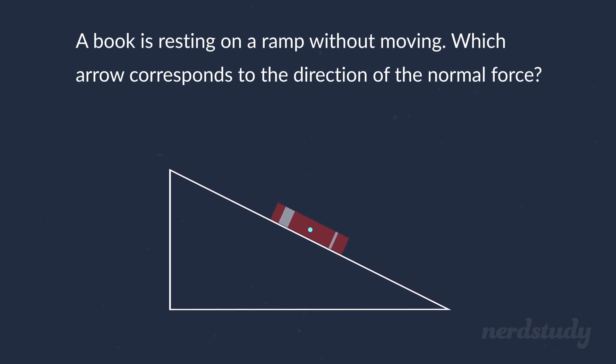In this case, which arrow corresponds to the direction of the normal force? Well, the answer is this arrow here labeled C. It's a little strange, isn't it? Why should it be this slanted arrow? After all, the book isn't moving, so the force of gravity is evidently being canceled out. Shouldn't the normal force go upward to cancel out gravity?